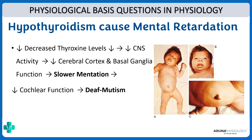Why does hypothyroidism cause mental retardation? That is because of the effect of thyroid hormone on the central nervous system. Thyroid hormone is required for normal CNS activity and is also responsible for the normal growth and development of the cerebral cortex, cerebellar cortex and basal ganglia. With decreased thyroxine levels there would be slower mentation, and it also has a role in cochlear function and can lead to deaf-mutism. The main reason for mental retardation is impaired development of the cerebral cortex, cerebellar cortex and basal ganglia due to decreased thyroid hormone levels.